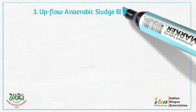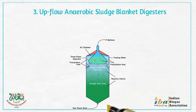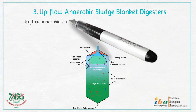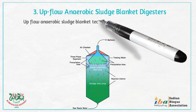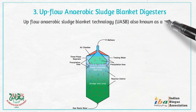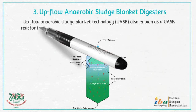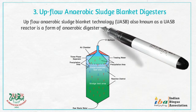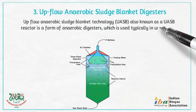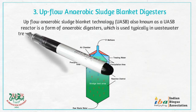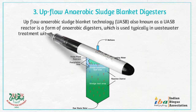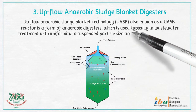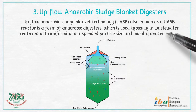3. Upflow Anaerobic Sludge Blanket digesters. Upflow Anaerobic Sludge Blanket technology, UASB, also known as a UASB reactor, is a form of anaerobic digester which is used typically in wastewater treatment, with uniformity in suspended particle size and low dry matter content.